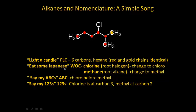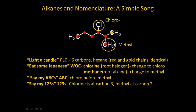Eat some Japanese - what's on the chain? I have a chlorine on the chain, and I have a methyl on the chain. When the halogen is chlorine - any halogen - I change the ending to O. If it's an alkyl group, the root for this is methane, but I change the ending to L, so it becomes methyl. Then I say my ABCs - which comes first: chloro or methyl? Chloro comes first.